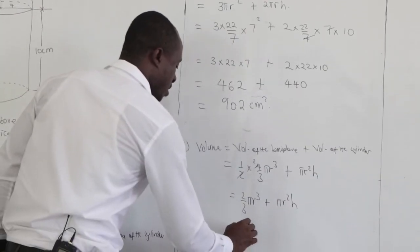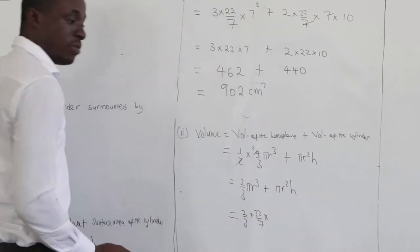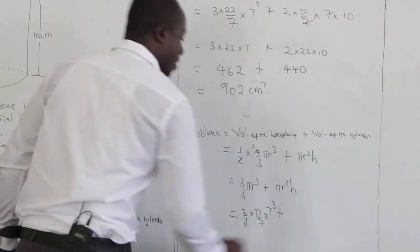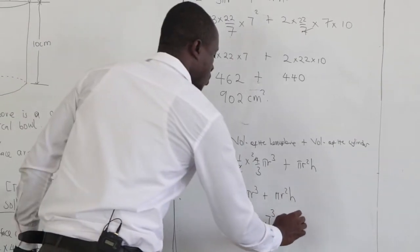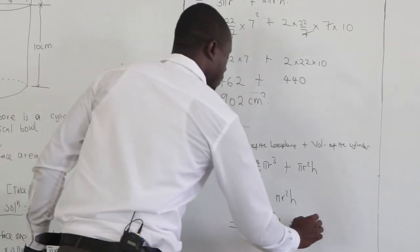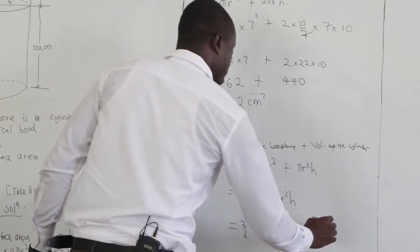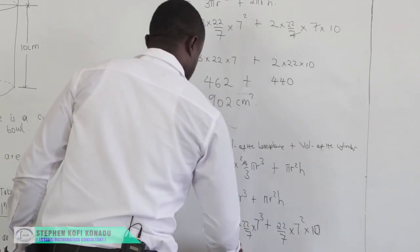Now, we know pi. Our pi is 22 over 7. What is the radius? 7. So I have 7 to the power of 3. And then times my height. What is my height? My height of the cylinder is 10.